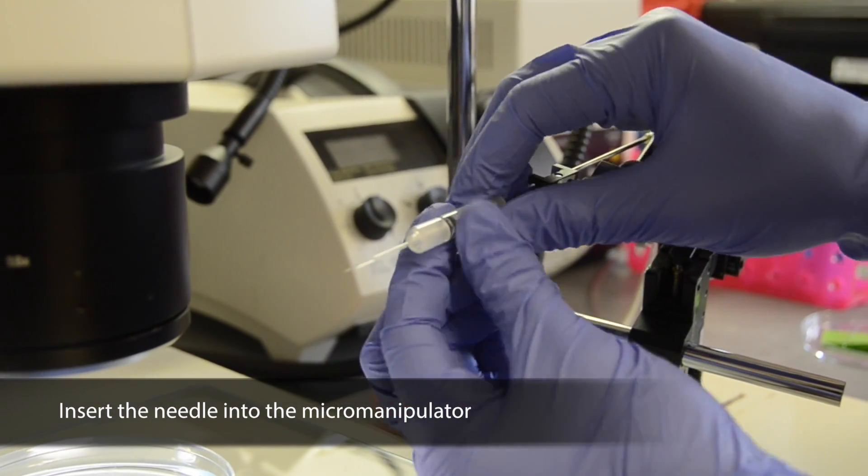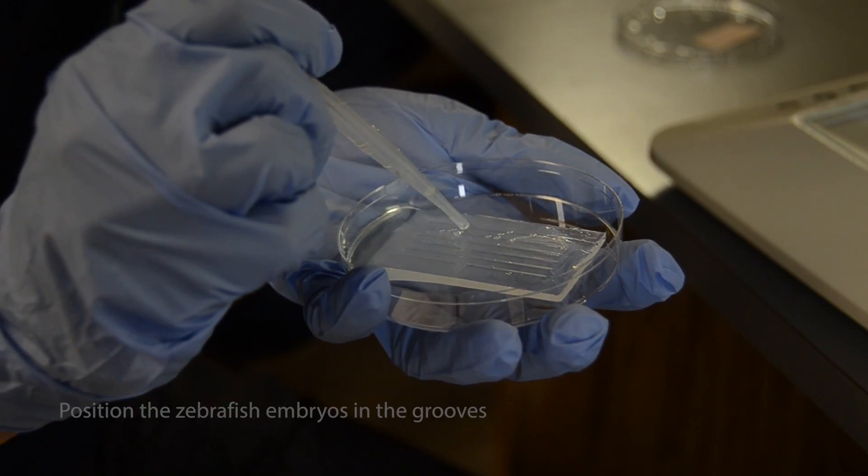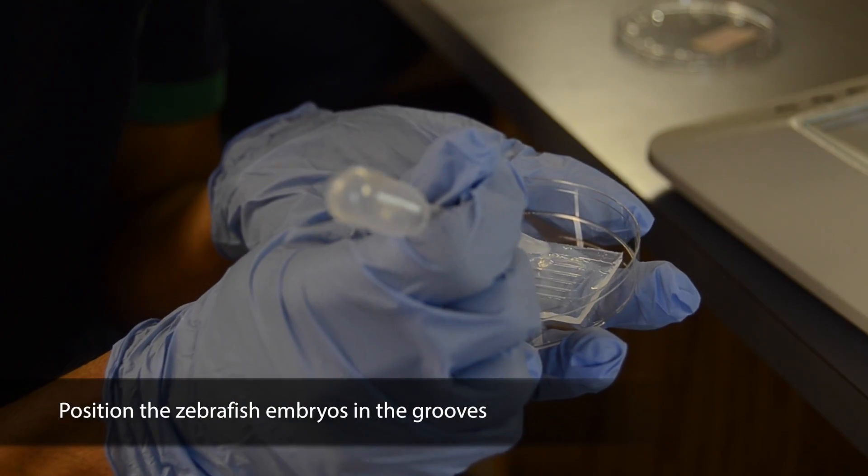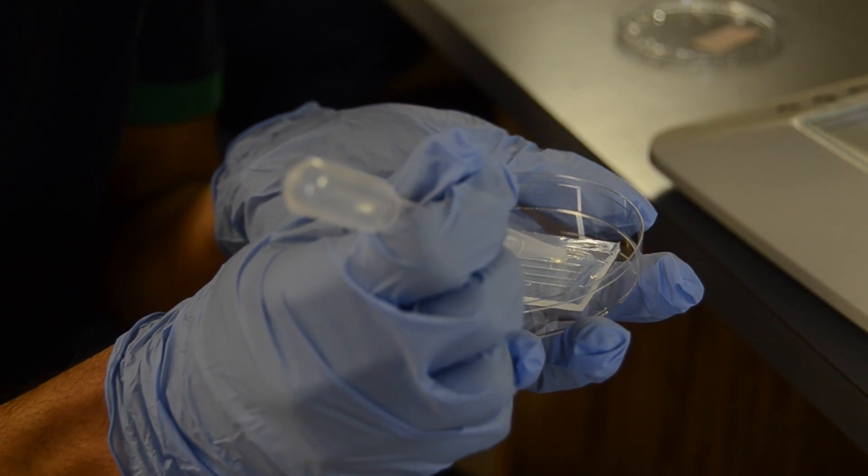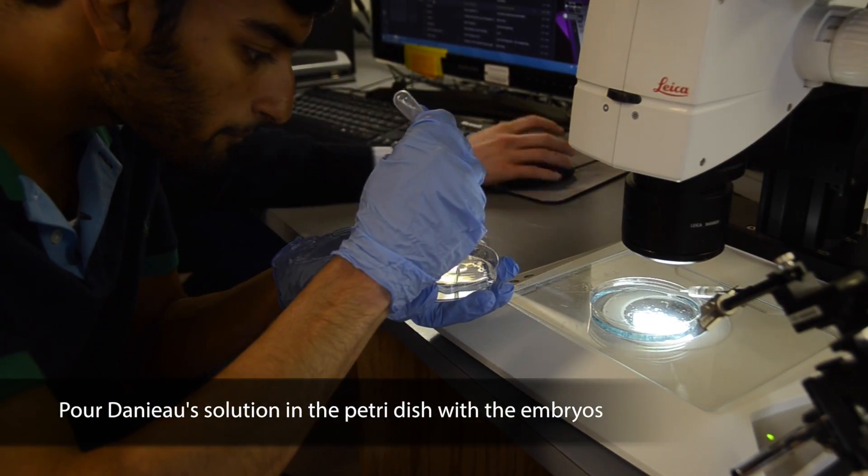Insert the needle into the micromanipulator and set the system. Place zebrafish embryos in a piece of agar that has grooves in it. Position the embryos in the grooves. This will stabilize the embryos when you are injecting. Pour Daniao solution in the petri dish with the agar and the embryos.